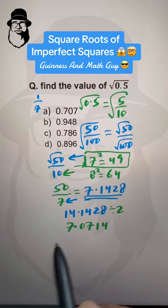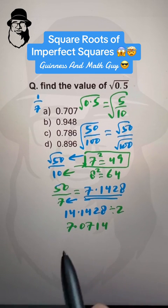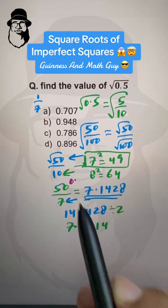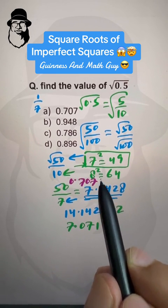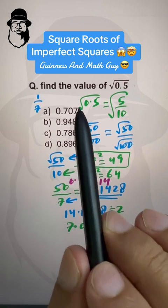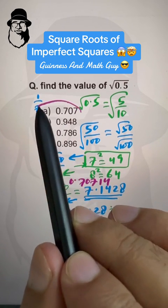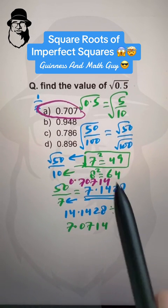we have to divide it by 10 to get 0.70714, and that's choice A. Remember, this is approximate answer.